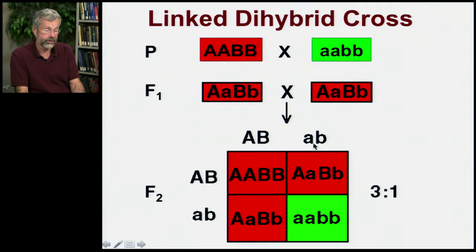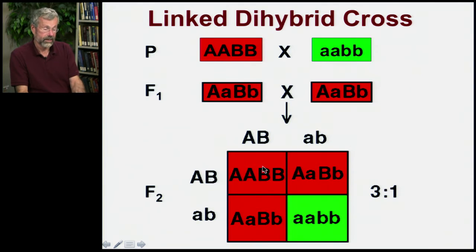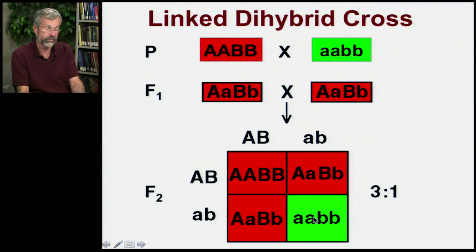In this case, since we only have these two possible combinations — likewise with the other parent's gametes — there are only three possible phenotypes in the F2. They'd always have at least one capital A and one capital B three-fourths of the time, and only a fourth of cases would have the double homozygote recessive. The double homozygote dominant and the double heterozygotes show complete dominance and look exactly the same, so the ratio of phenotypes is 3 to 1.